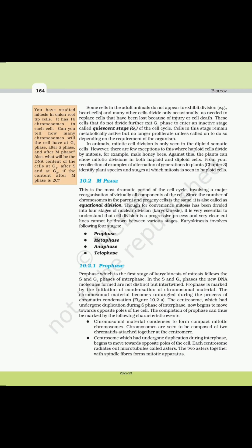Some cells in adult animals do not appear to exhibit division, e.g., heart cells, and many other cells divide only occasionally as needed to replace cells lost due to injury or cell death. These cells that do not divide further exit G1 phase to enter an inactive stage called the quiescent stage (G0) of the cell cycle. Cells in this stage remain metabolically active but no longer proliferate unless called upon to do so.